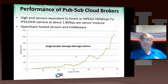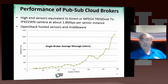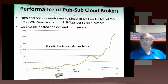When looking at the performance of these brokers, we used high-end sensors roughly equivalent in bandwidth to an MPEG-4 webcam or the Kinect, which is around 1.8 Mbps per instance — pretty high bandwidth. As you look at the number of clients, sensors were hosted on OpenStack using virtual machines. The latency is relatively small until around 150 clients, when it gets a little out of hand. So even with very high bandwidth, you can put about 100 sensors on a single broker.